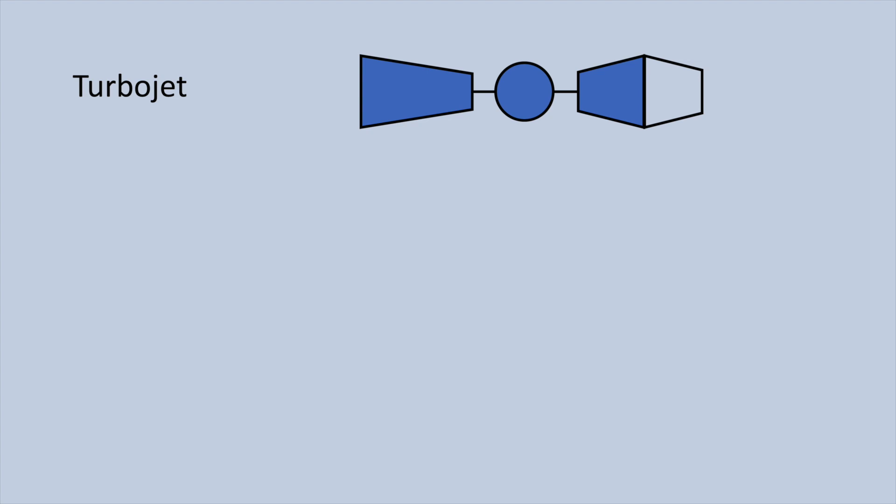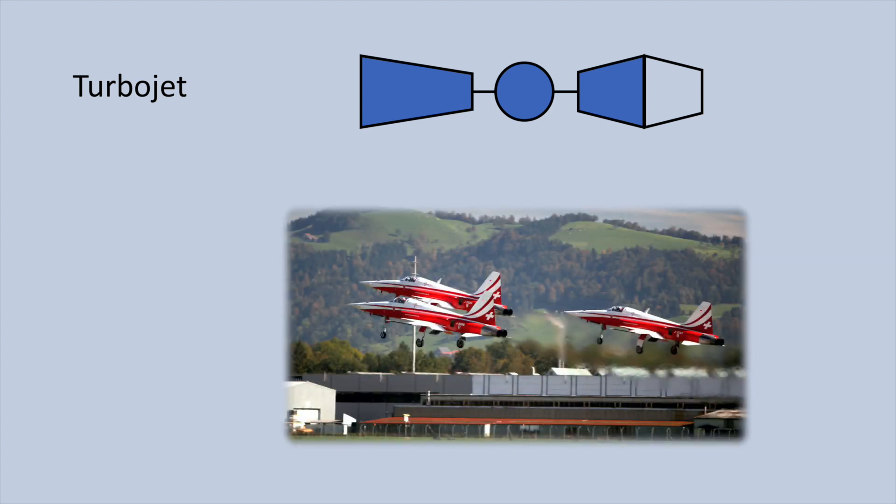The earliest jet engines consisted of a gas turbine followed by a nozzle to convert the remaining energy in the exhaust gases into a high-speed jet of air. This engine, known as a turbojet, is still in use today in many military aircraft, like the F-5 Tiger, for example.